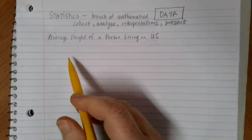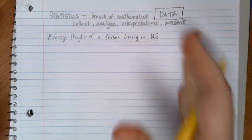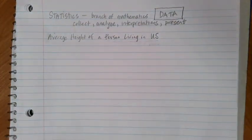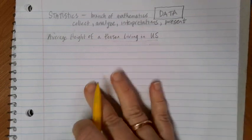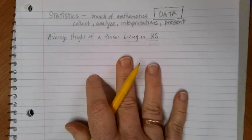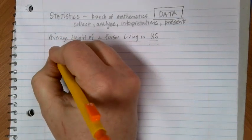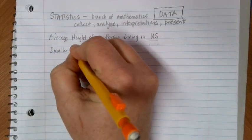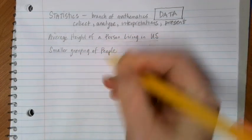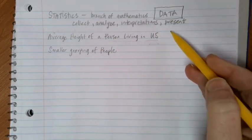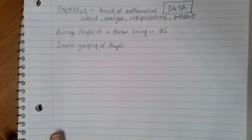The logistics of that are pretty crazy. The U.S. only does a census once every 10 years where they try to contact every person that lives in the U.S. It's a big deal that's very expensive. So if I'm interested in this type of information, chances are I'd like to look at a smaller grouping of people, see what their average height is, and use that to make a conclusion about the average height of a person living in the U.S. With that in mind, let's talk about some vocabulary.